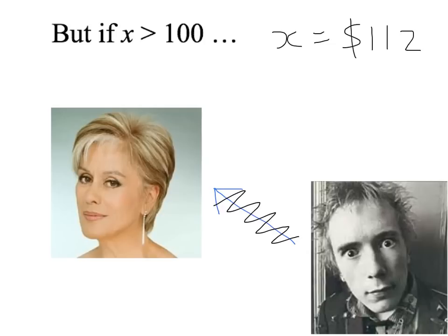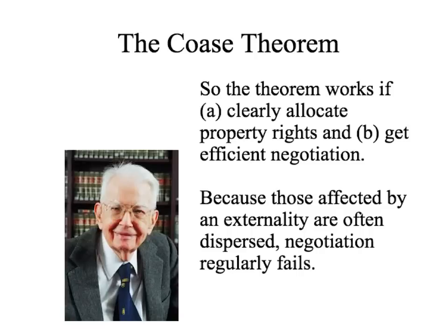Clearly, Kiri and John care about who's got the property right because whoever has it gets paid. But under the assumption that a dollar is a dollar, that doesn't matter. The key is that by allocating the property right, we get to the socially optimal outcome. So what's our takeaway from the Coase Theorem? Our simple example shows that if we clearly allocate property rights and get efficient negotiation, we can internalize the externality — the government doesn't need to do anything more than allocate a property right to fix an externality.